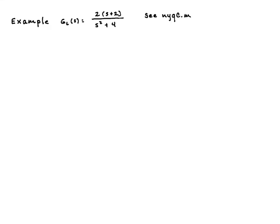Hi folks. So here's an example of a Nyquist analysis for a loop transfer function that has some poles on the imaginary axis. This one's not too bad in terms of the stability analysis, but let's just go through the process.